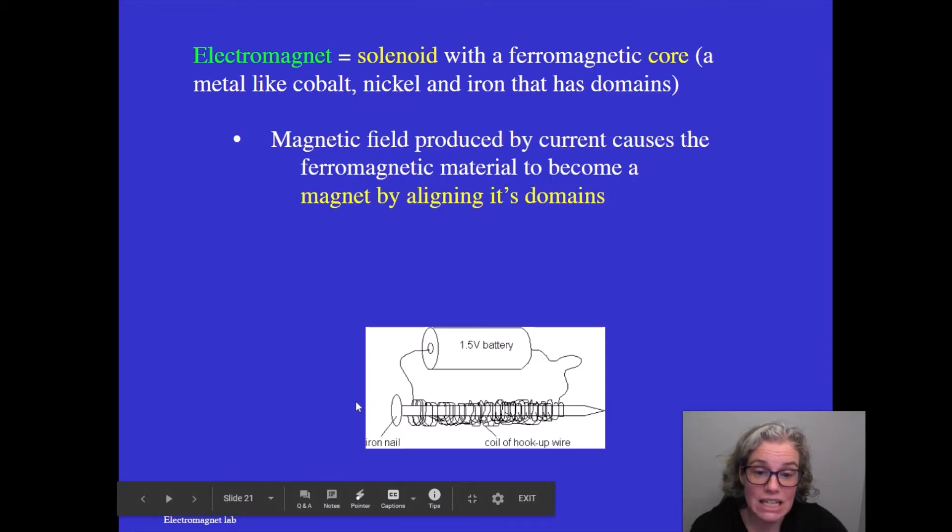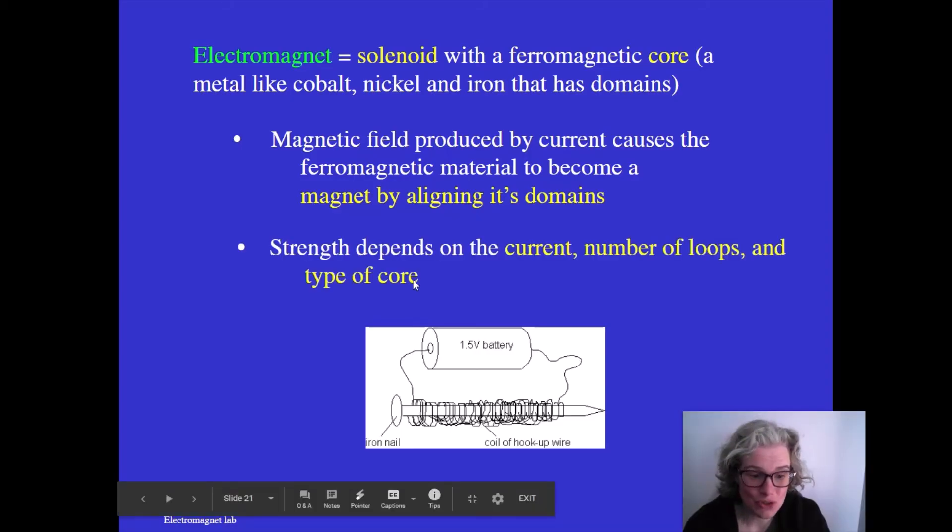It has many uses in our society. The strength of the electromagnet depends on the amount of current passing through the wire, the number of loops that are wrapped around the core, and the type of material that we use in the core. It has to be ferromagnetic, meaning it has to have domains, but the type of core could vary.